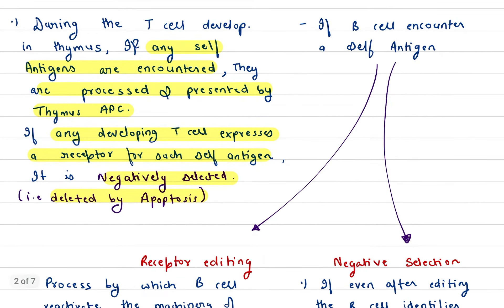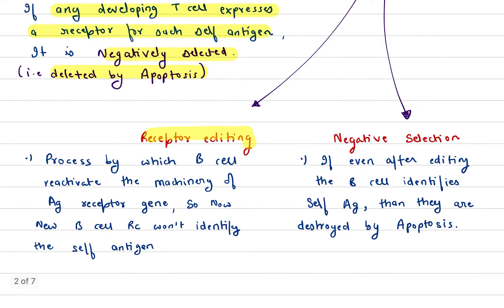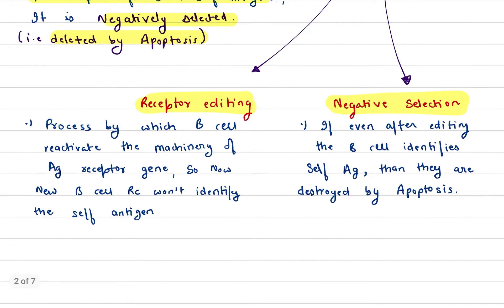The second site is bone marrow. If a B cell encounters a self-antigen, there are two mechanisms: receptor editing and negative selection. In receptor editing, the B cell reactivates the machinery of the antigen receptor gene, so the new B cell receptor will not identify the self-antigen. If receptor editing fails, the B cell is destroyed via apoptosis through negative selection.